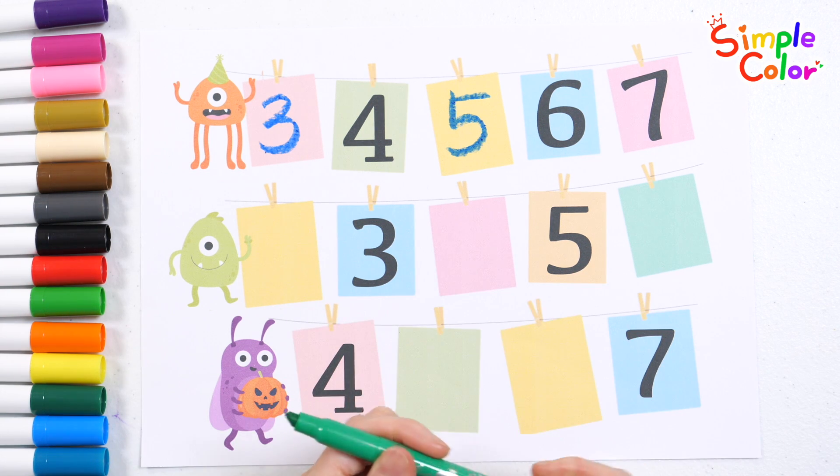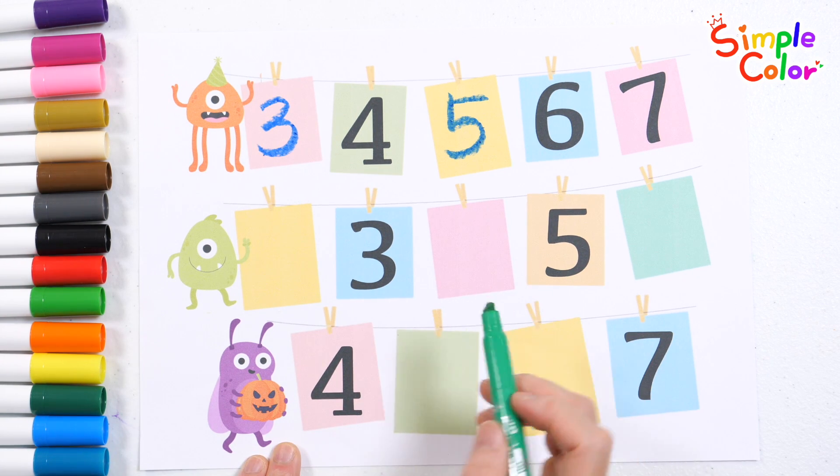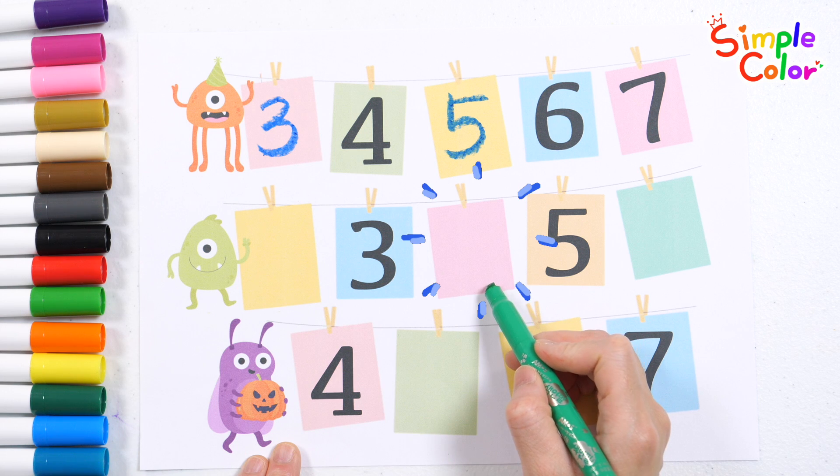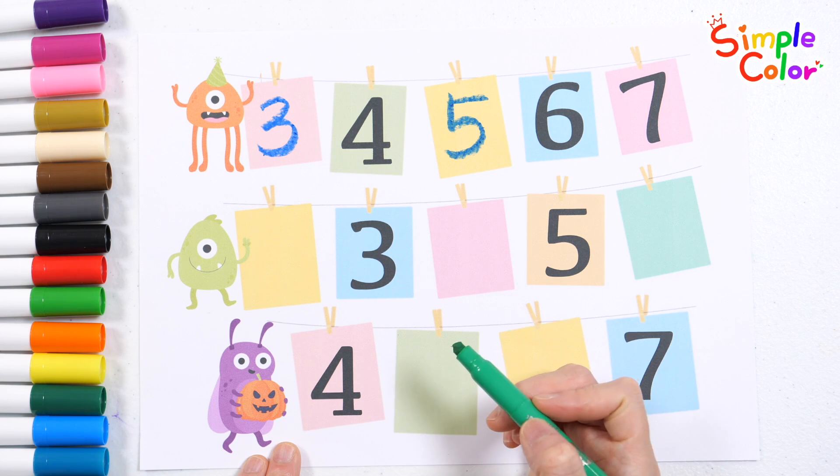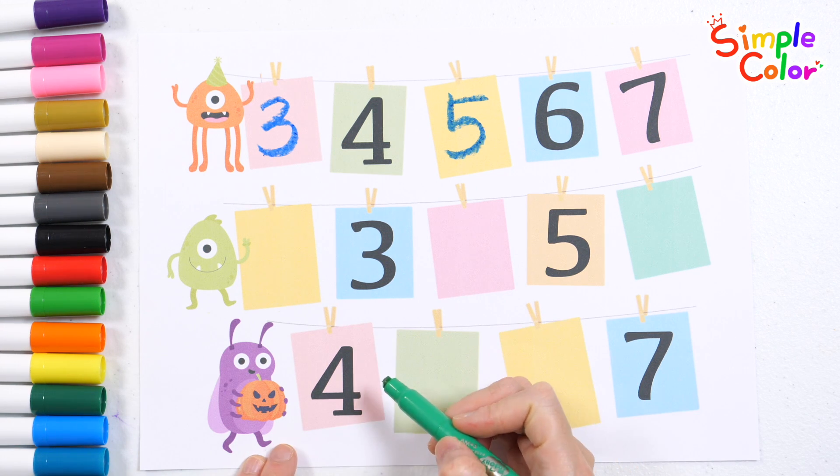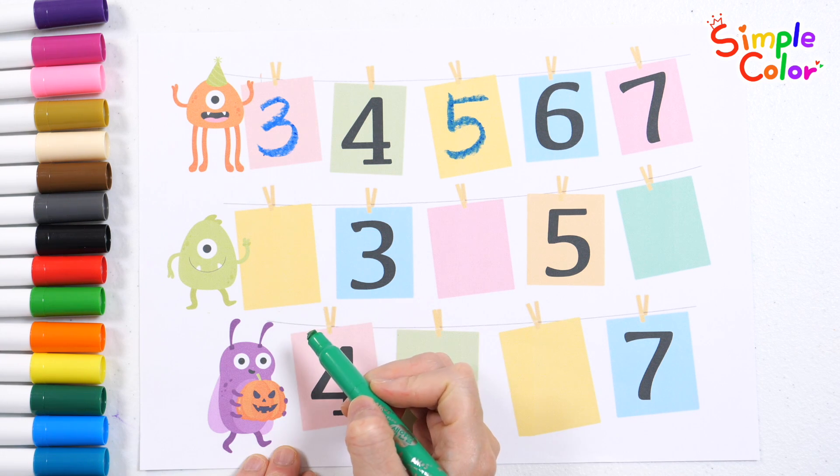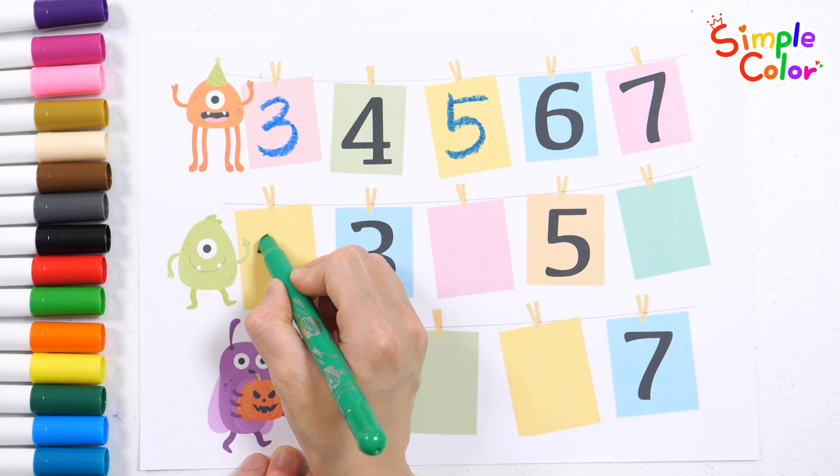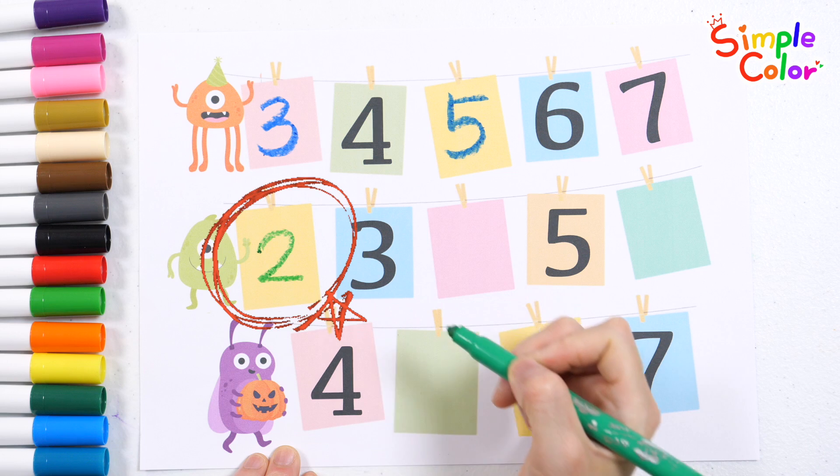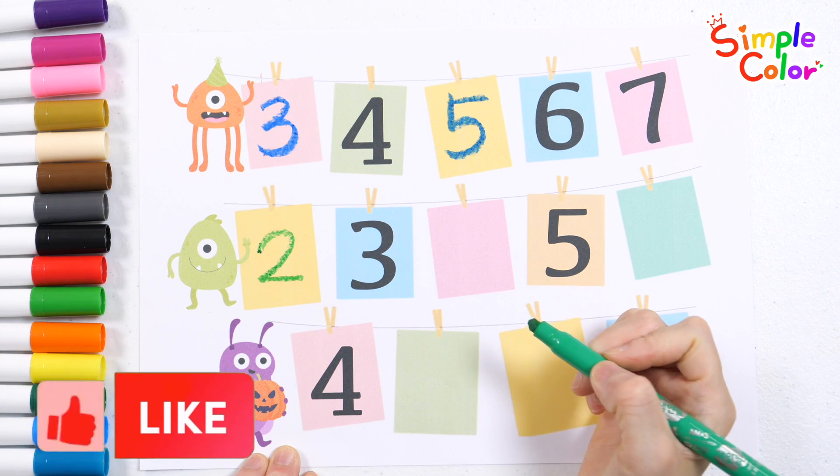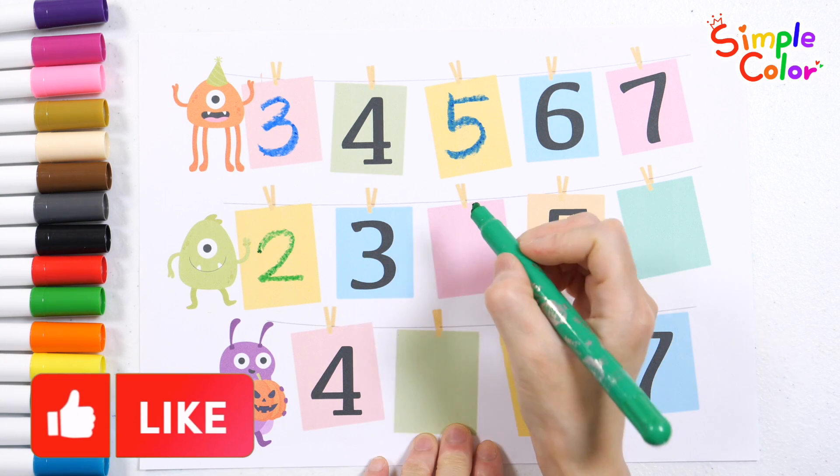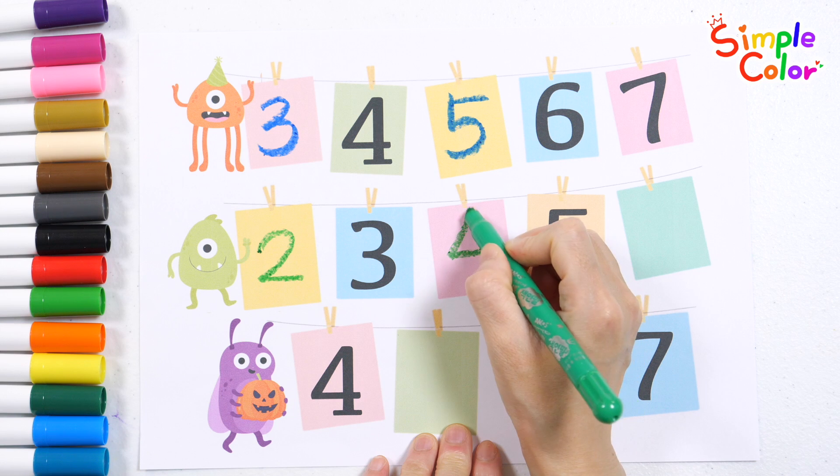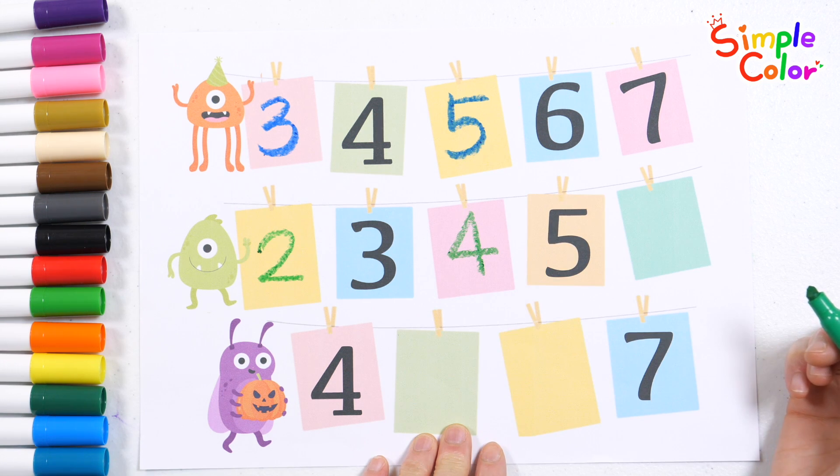Now, let's guess the 3 numbers that go in the second row. First, what number comes before 3? The answer is 2. Do you know the number that's between 3 and 5? That's right! It's the number 4.